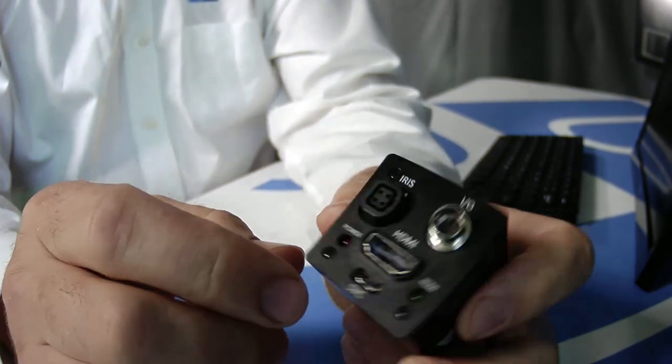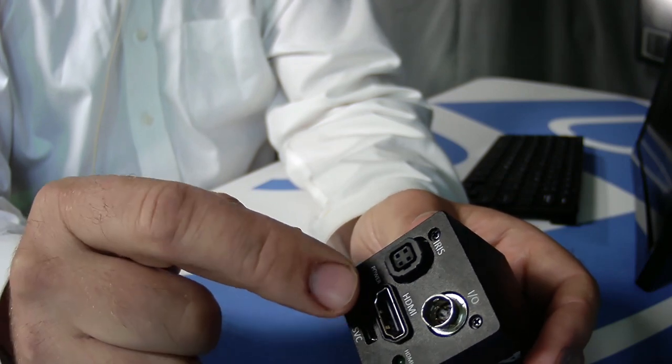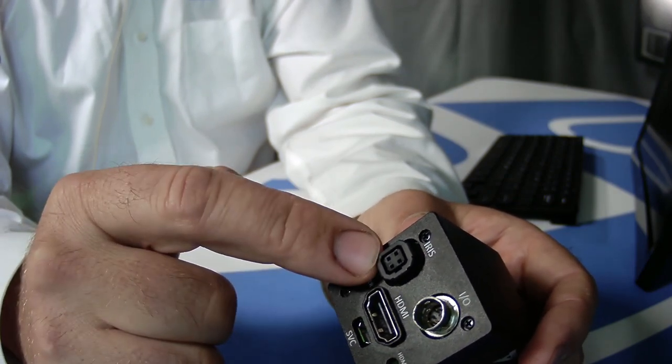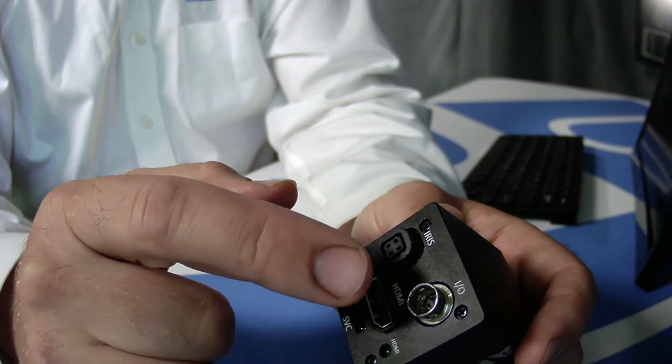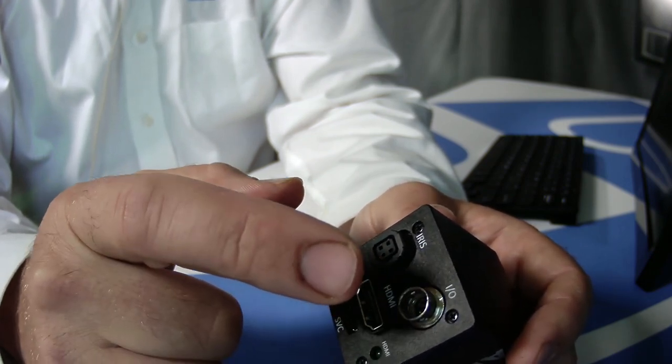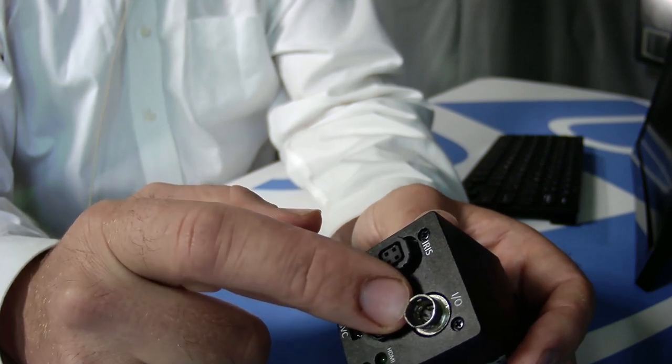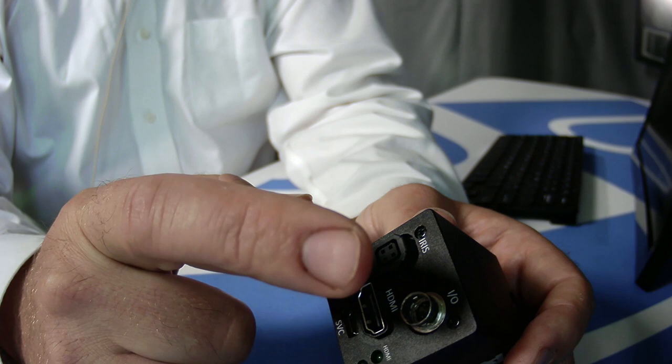On the back here is an HDMI connector for your video output, as well as iris control for lenses with iris control. This is a multi-function port. This contains your RS-485 remote control so you can step through the menus, as well as power.